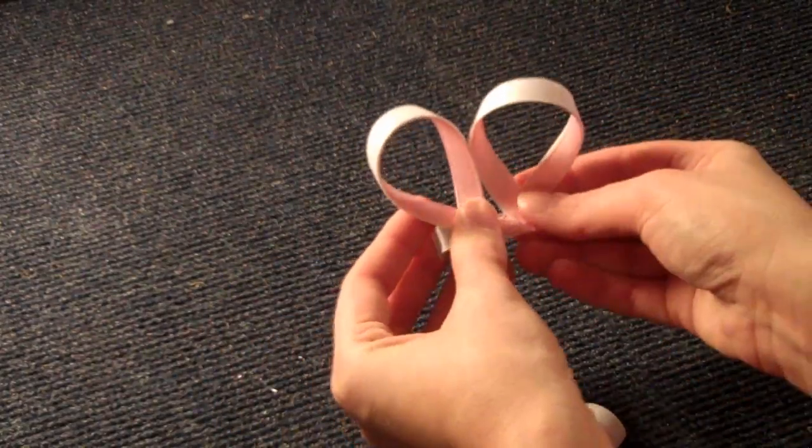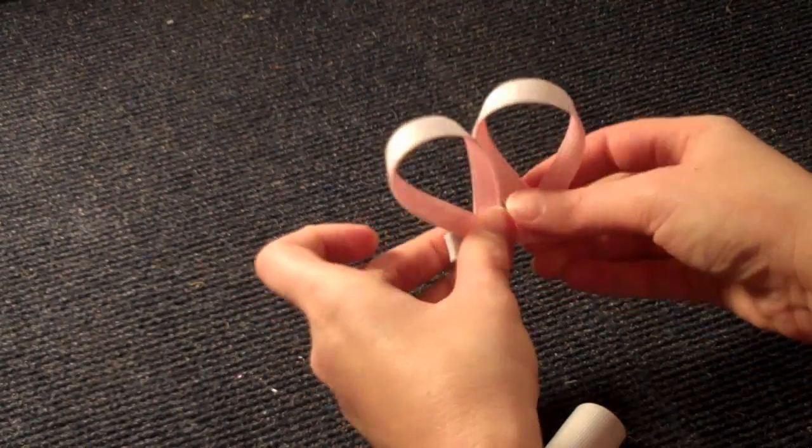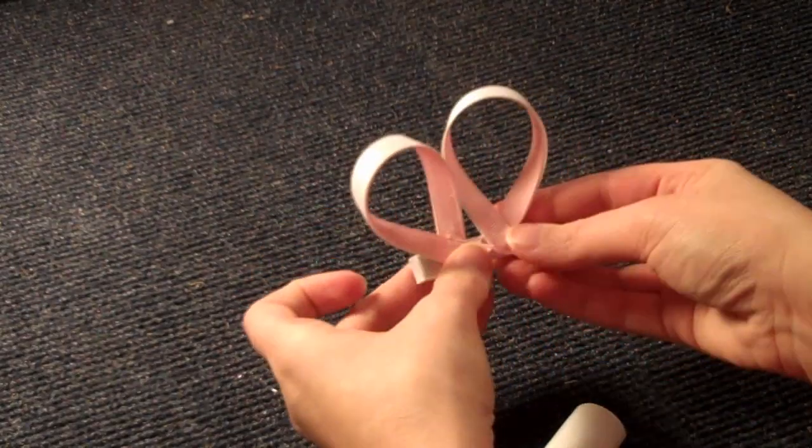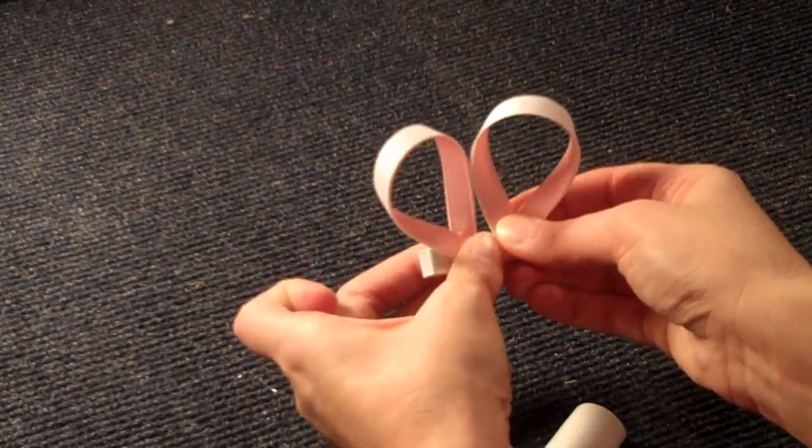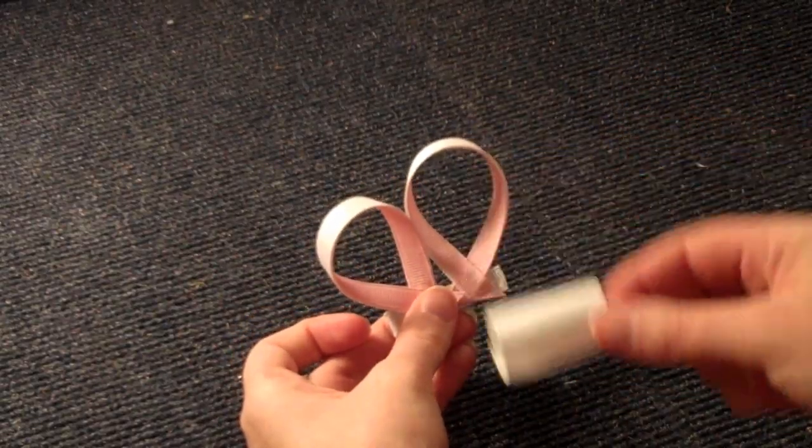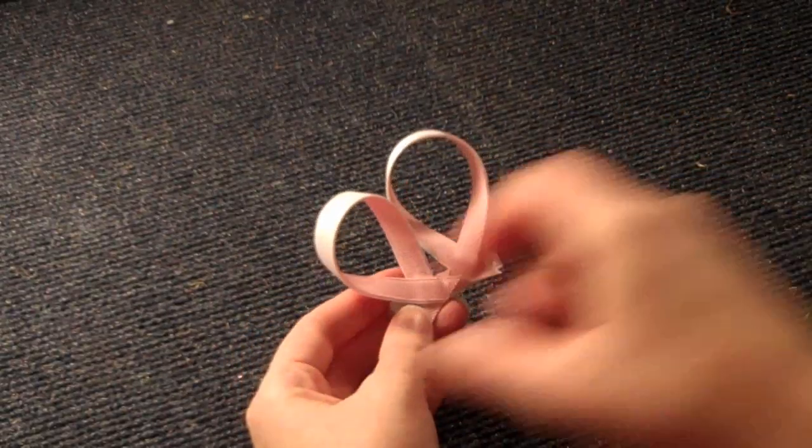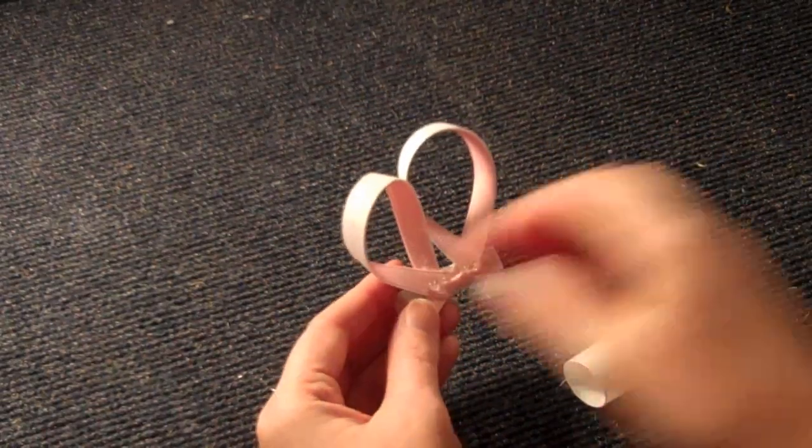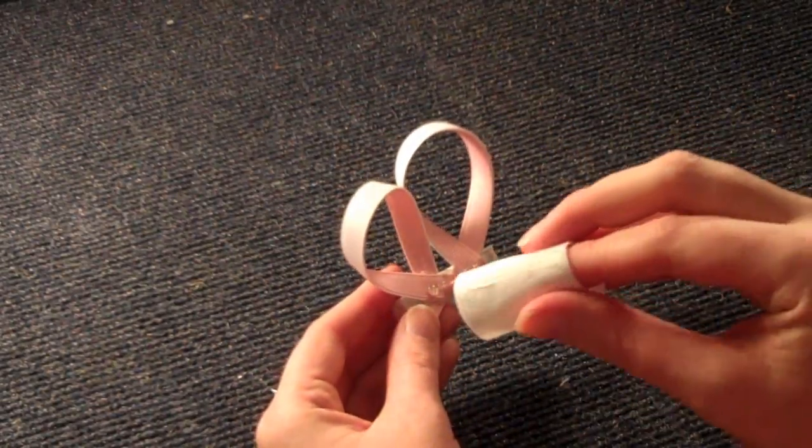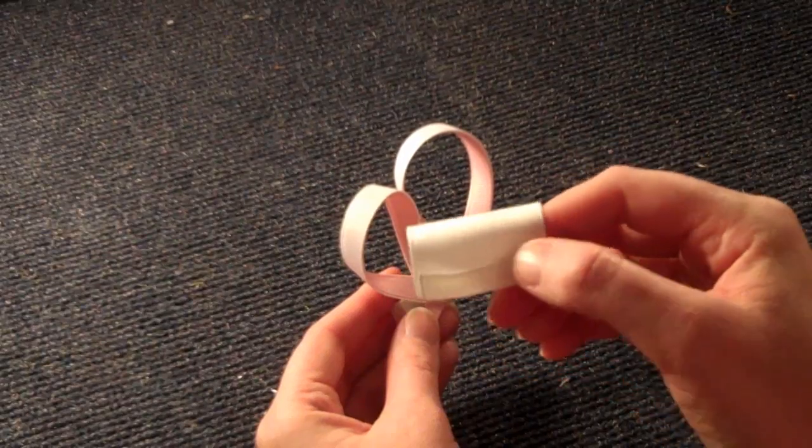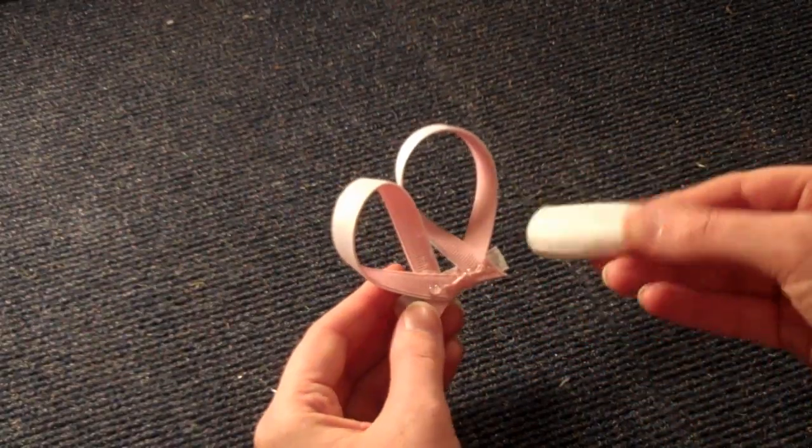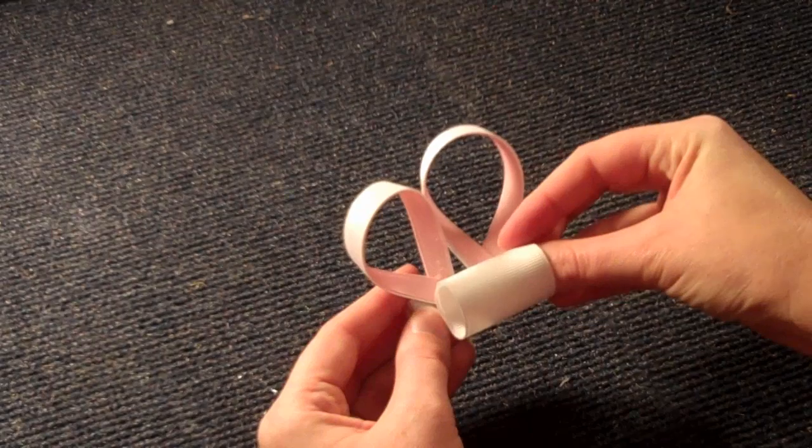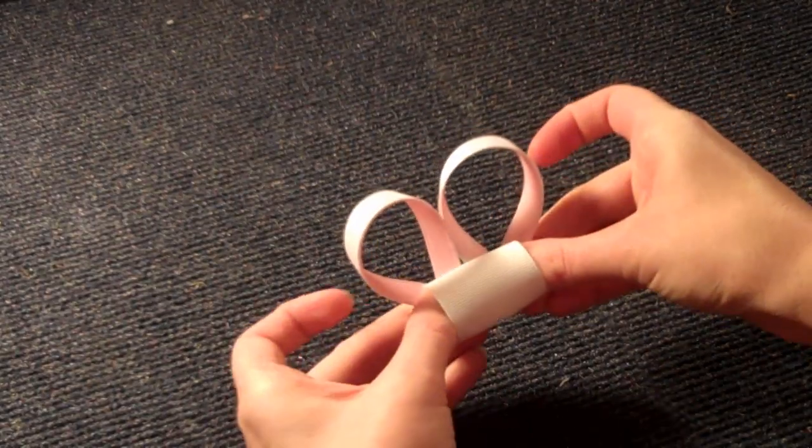Put your ears on like so. I'm going to kind of angle mine. And now our ears are on. I'm going to just take the head and we're going to glue it on top of our ears. I'm going to be gluing the seam side down, the part that we glued earlier, just so you won't see it.